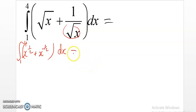This means we will have the integral, and if we integrate these, it will simply be 2 over 3 x raised to 3 over 2.